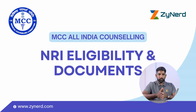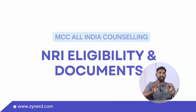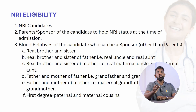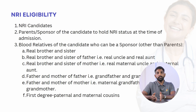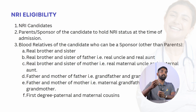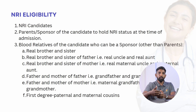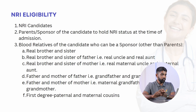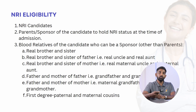Let's look at the NRI quota, the eligibility and documents. A lot of candidates call up and ask about taking the NRI seat, but they don't have anyone in their relatives who is an NRI to sponsor them. In that case, they will not be able to take up the NRI seat. Either your parent or your blood relatives should sponsor you — only then you will be able to take up the NRI seat.